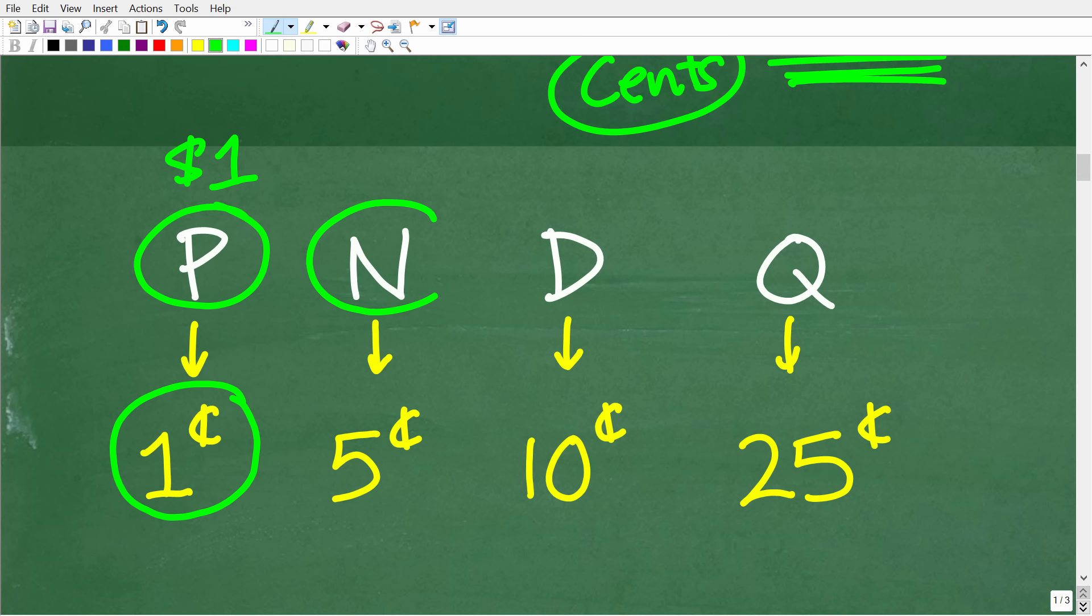Now, the next thing we have is a nickel, and it's worth five cents. And then we have a dime, and that is worth 10 cents. And then finally, we have a quarter, and that is worth 25 cents.